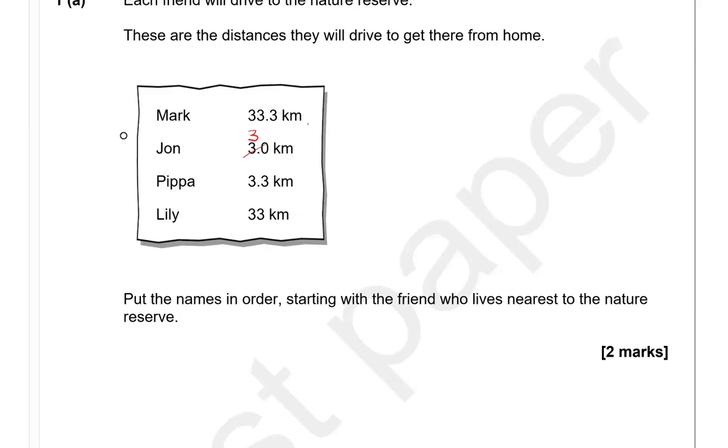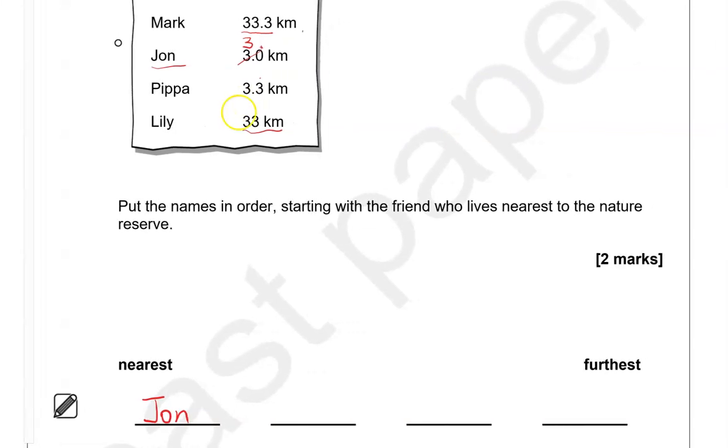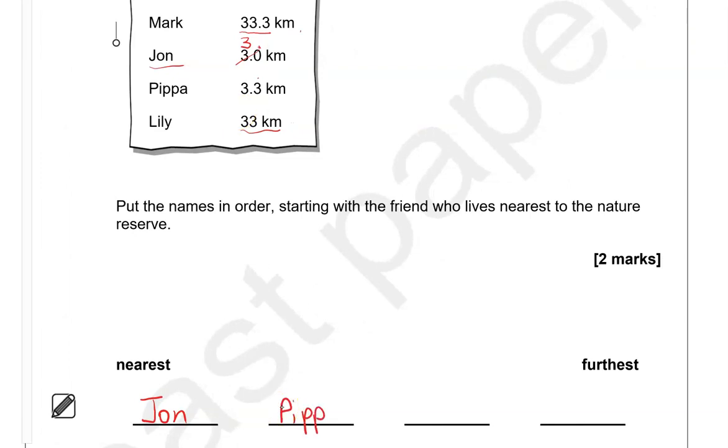So which out of these distances is the smallest? This one is 33.3, so more than 33. This is 3, and this is 3.3. So 3 is the lowest of them. So we're going to write John first. Then, after John, we've got Pippa with 3.3 kilometres, so just over 3 kilometres. Now we've got Mark and Lily. Mark, that is 33.3, so over 33. That's why we're going to put Lily before Mark. So John lives nearest to the nature reserve, and Mark lives the furthest.